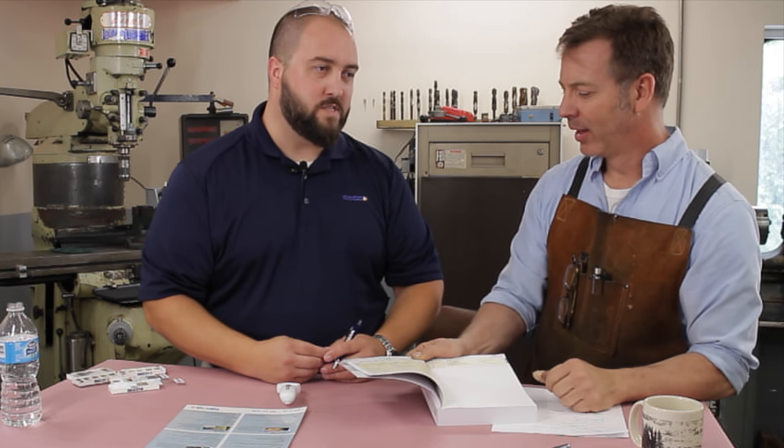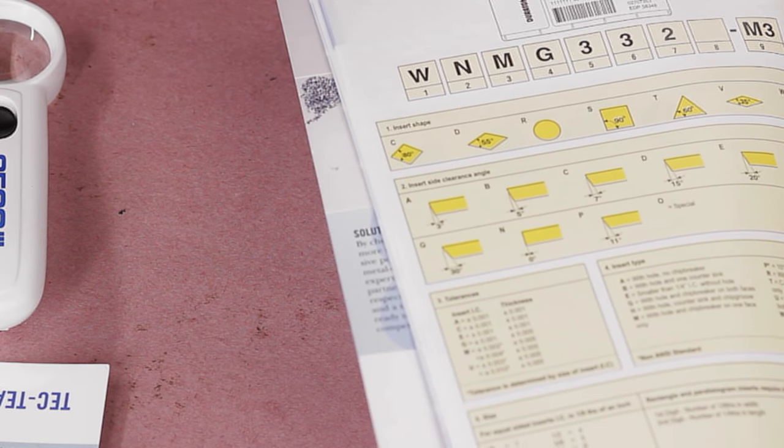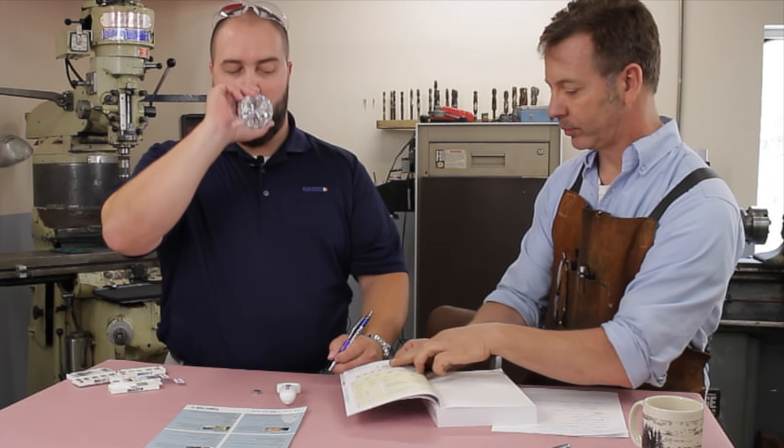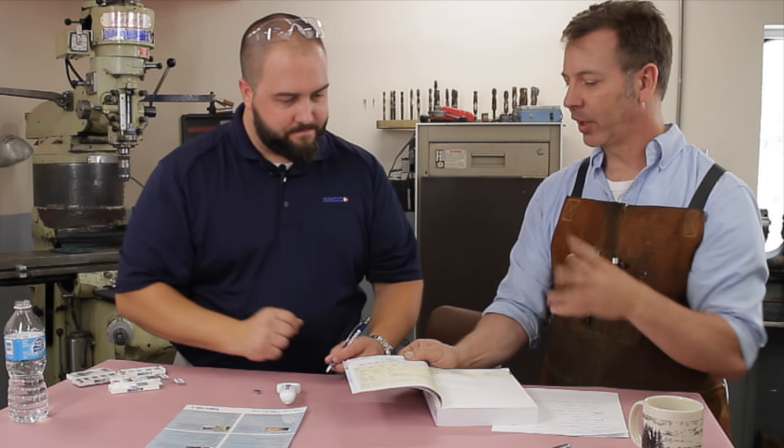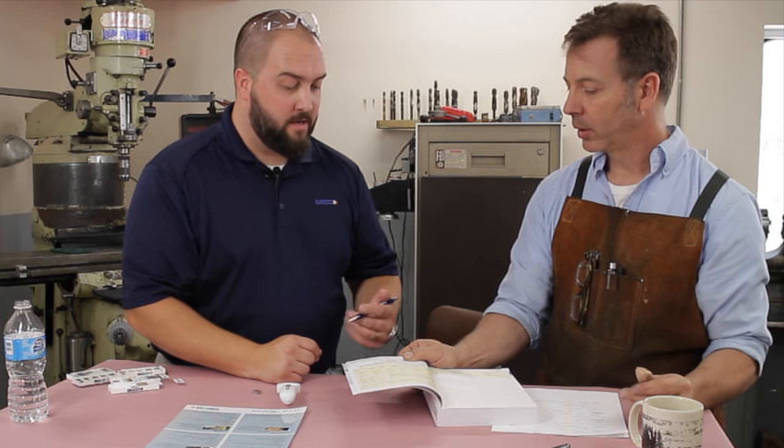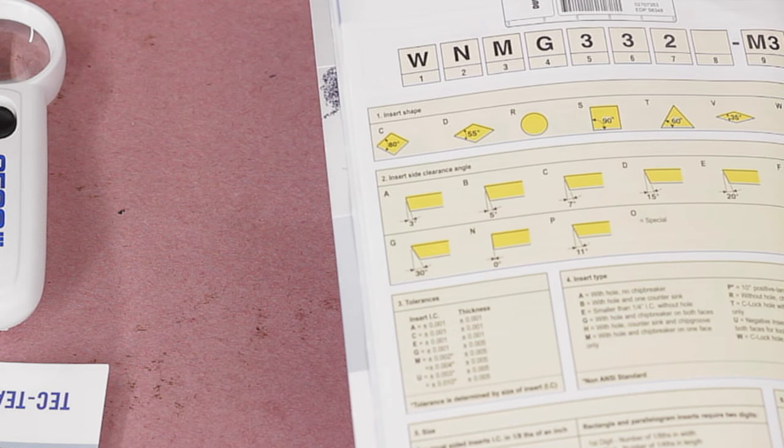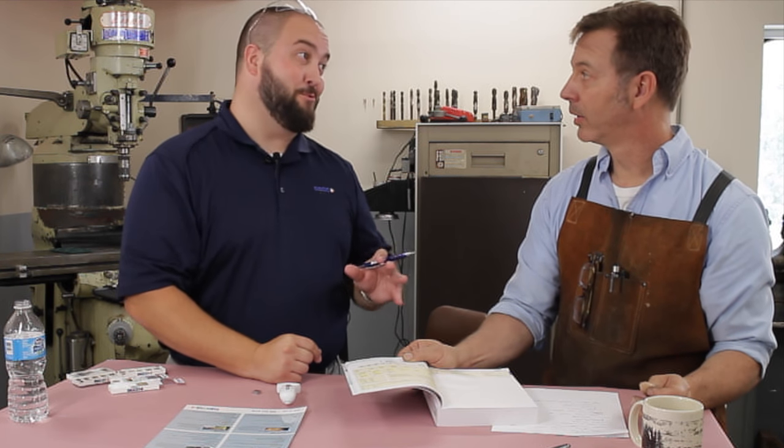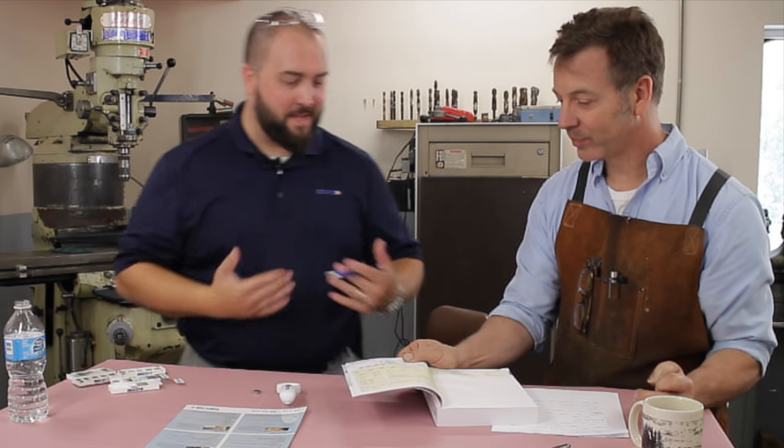Next thing you go to is number three. That's your tolerance of your insert, your thickness as well. It's a WNM. We go down to M. Your tolerance is going to be plus or minus two thou on the IC of the insert. Now that's from corner to corner on the insert.